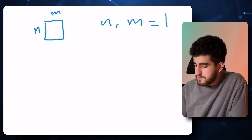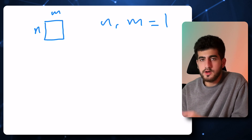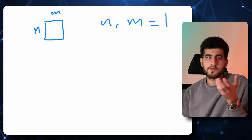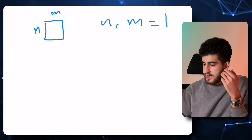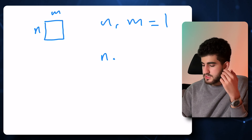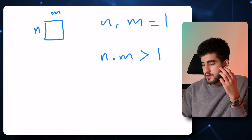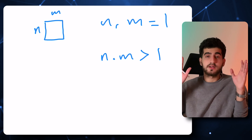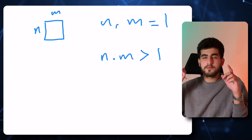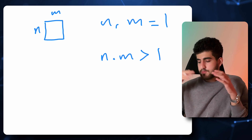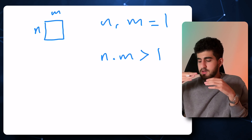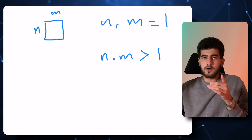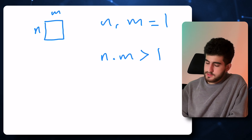But if at least one of them is greater than 1, it means that n times m is greater than 1. In other words, we have more than one number. If that happens, it's just enough to shift all the numbers.